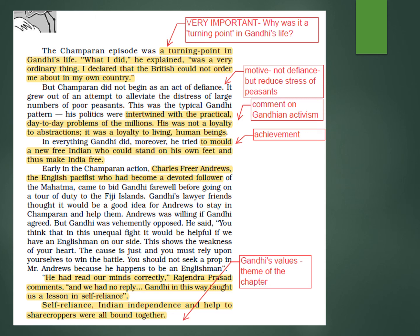'You should not seek a prop in Mr Andrews because he happens to be an Englishman.' Rajendra Prasad says: 'He had read our minds clearly, and we had no reply.' Gandhi in this way taught them a lesson in self-reliance. The entire Champaran episode was a lesson in self-reliance, Indian independence, and help to sharecroppers — all three were bound together.